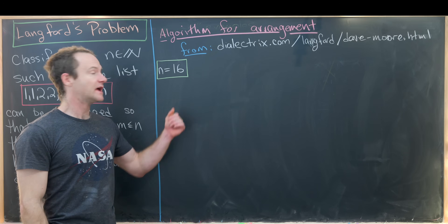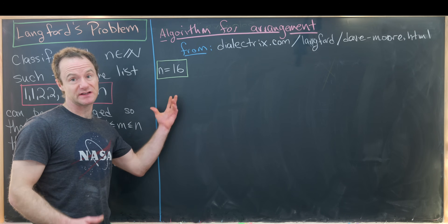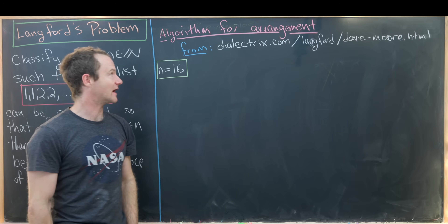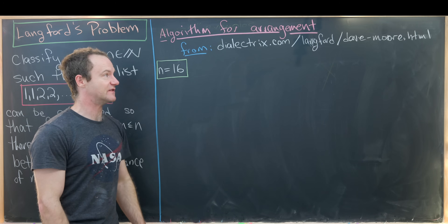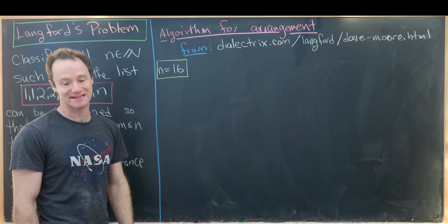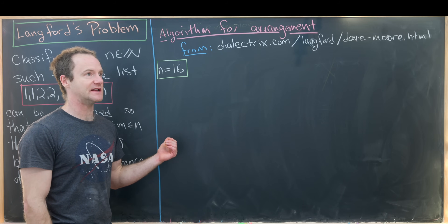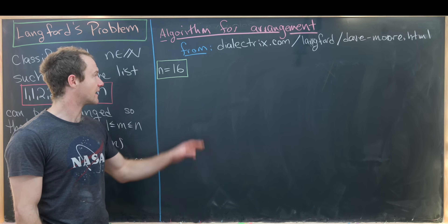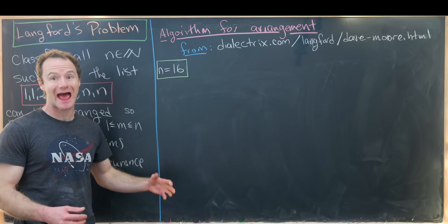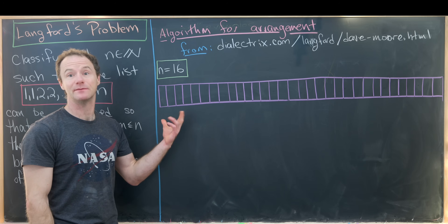Here I'll present an algorithm for writing an allowable configuration when n is congruent to 0 or 3 mod 4. We'll look at the case when n is 0 mod 4 with the special case n equals 16 — I think this algorithm is easily extendable. This algorithm for arrangement comes from dielectrics.com/langford/davemoore.html, which has a lot of good information. So for n equals 16, we make a rectangle with 2 times 16, or 32 boxes, to fill in.